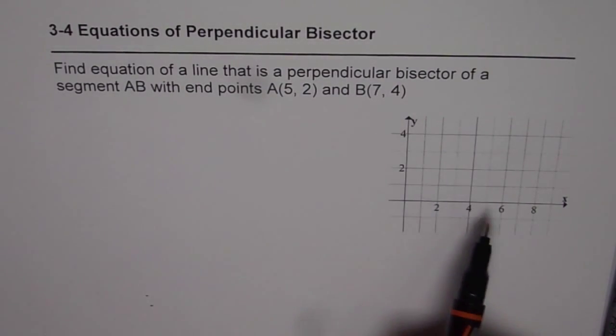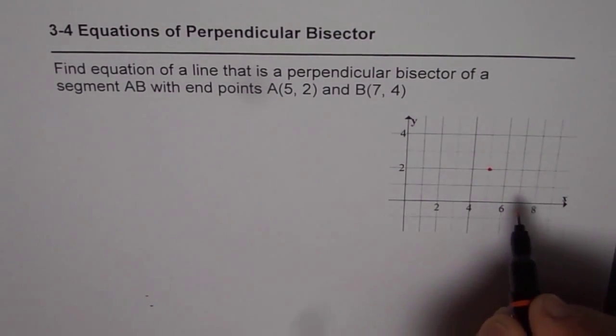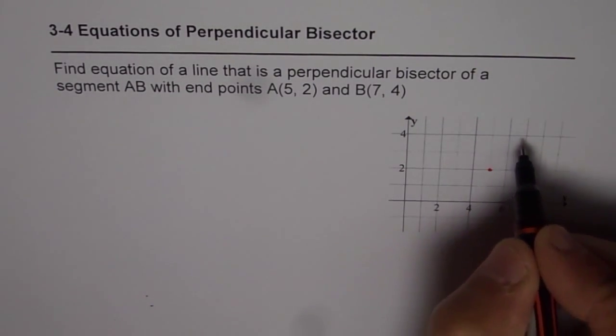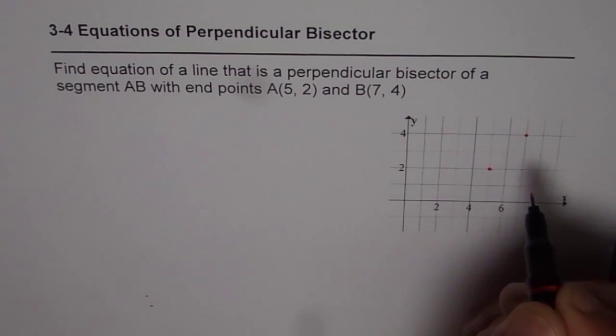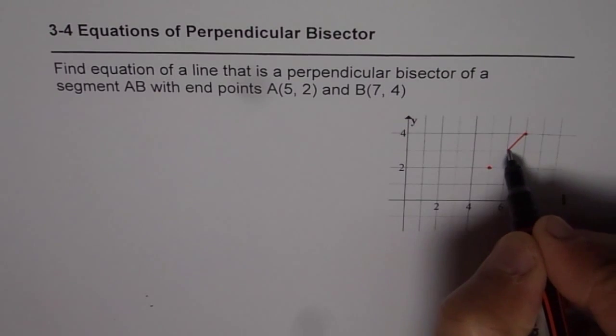Find the equation of a line that is a perpendicular bisector of a segment AB with endpoints A(5,2) and B(7,4). Let me first sketch the segment. Point A is 5,2. Point B is 7,4, which will be this point. The line segment given to us is AB.